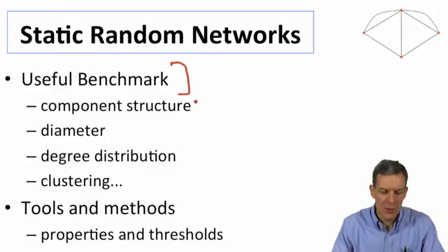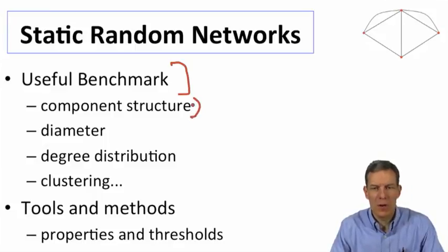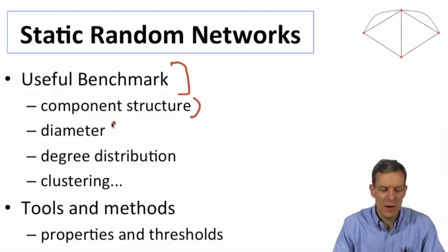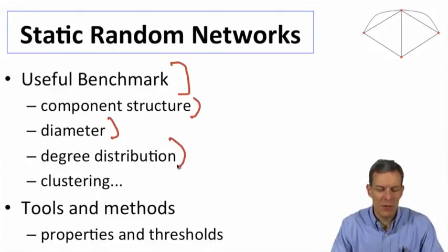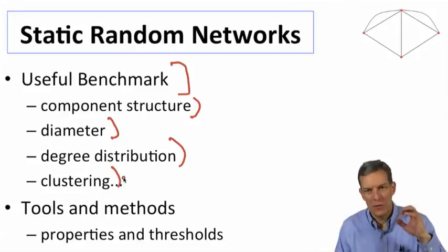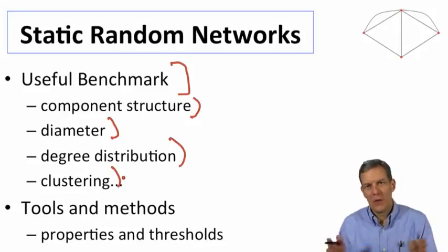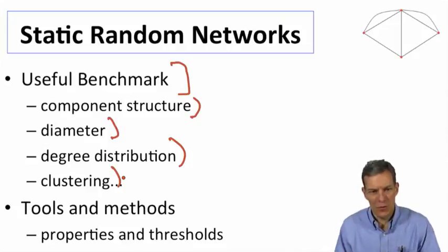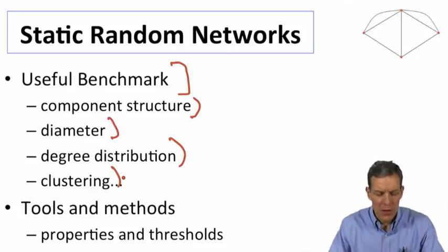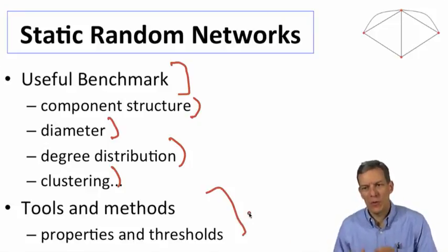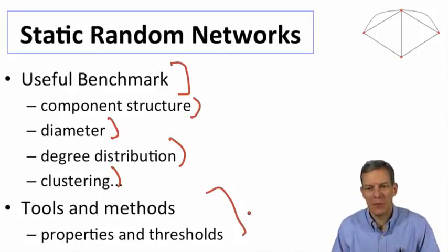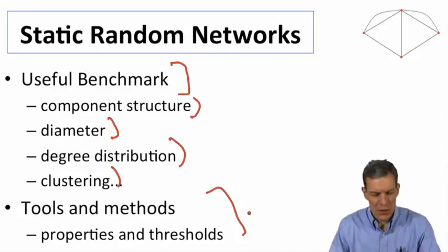So these benchmarks will tell us what component structures do we expect to see at random? What kind of diameters do we see at random? What kind of degree distributions do we see at random? What kind of clustering might we see at random? And so comparing things back to those uniform at random models will allow us to do some comparisons. Also, this will give us some basic ideas of tools and properties and how these kinds of things are worked with and how we might be able to work with them more generally.